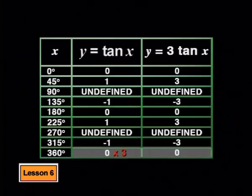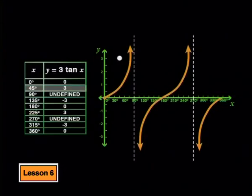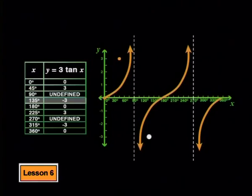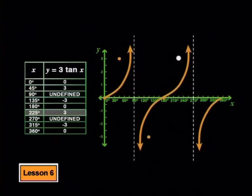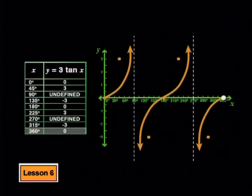This gives us enough points to plot the new graph on the same axes as the parent graph for comparison. The point 0 degrees, 0 stays the same. At 45 degrees the y value is 3, at 90 degrees there's an asymptote, at 135 degrees the y value is negative 3, at 180 degrees it's 0, at 225 degrees it's 3, at 270 degrees another asymptote, at 315 degrees negative 3, and at 360 degrees it's 0. We join these points with smooth curves.